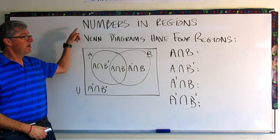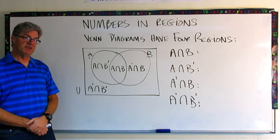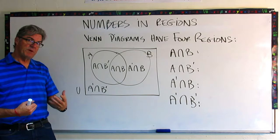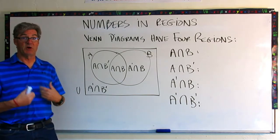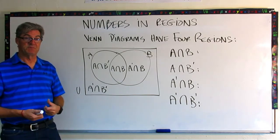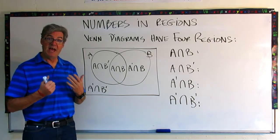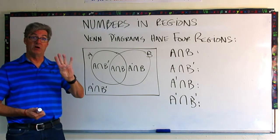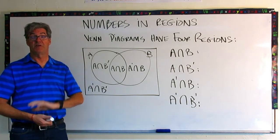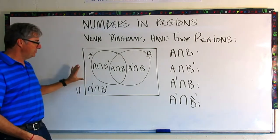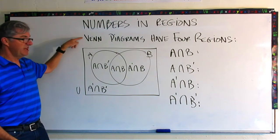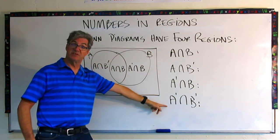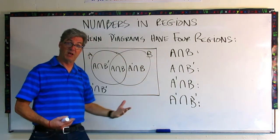Today's topic: numbers and regions. We need to go over a little bit about Venn diagrams first and then we'll get into it. Every Venn diagram has four different regions. I've marked them here, stated it there, and then we're going to describe the regions there.